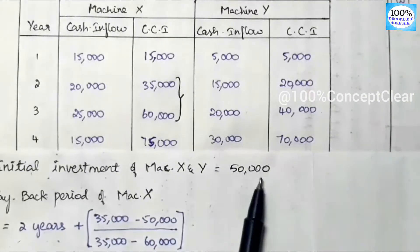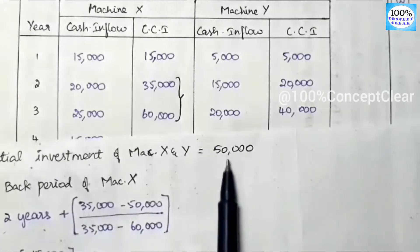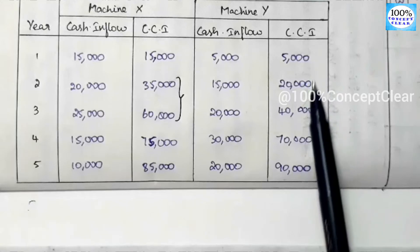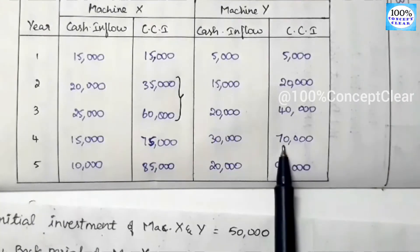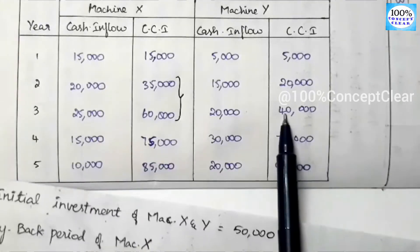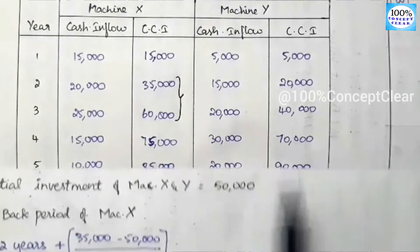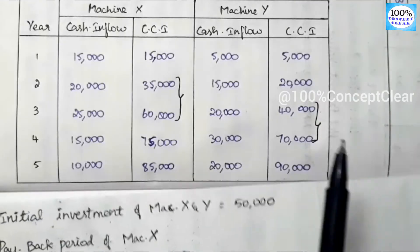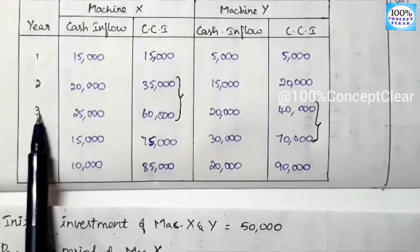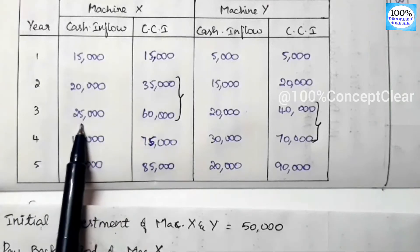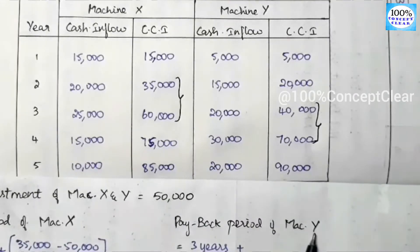The initial investment of Machine Y is Rs. 50,000. Looking at Machine Y's cumulative cash inflows: Year 3 = Rs. 40,000 and Year 4 = Rs. 70,000. Since Rs. 50,000 falls between Year 3 (Rs. 40,000) and Year 4 (Rs. 70,000), we have marked the 3rd and 4th year. The basic payback period of Machine Y is between 3 and 4 years.